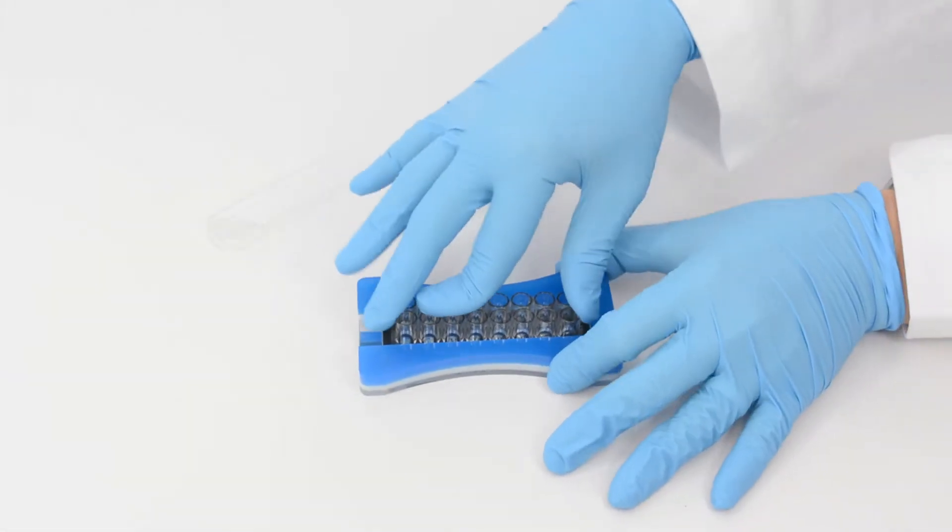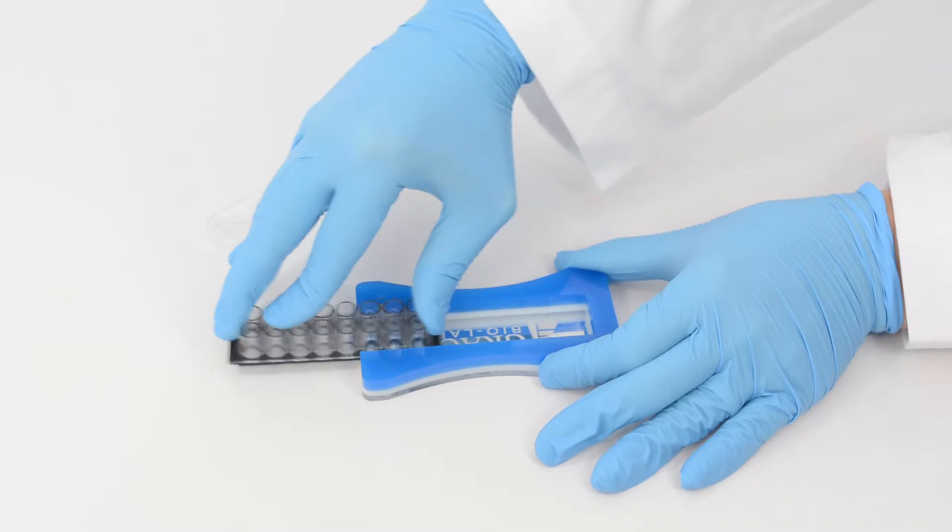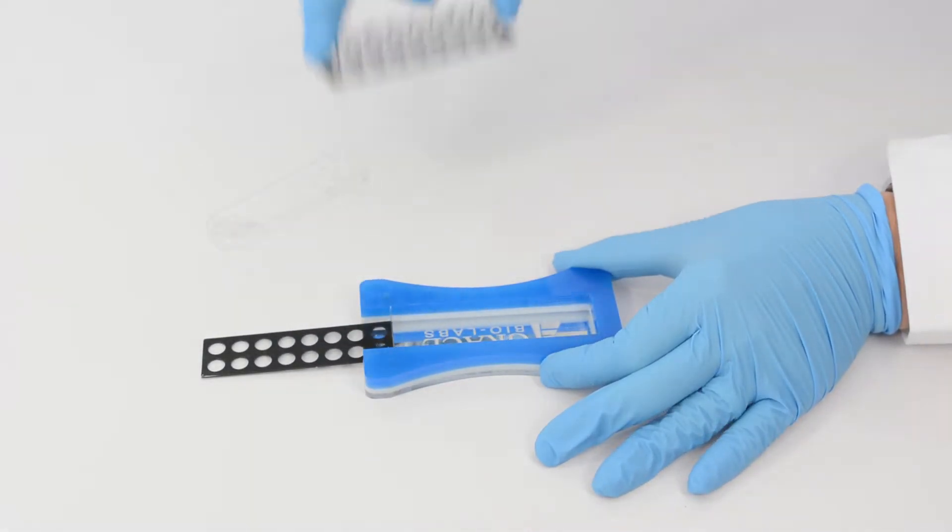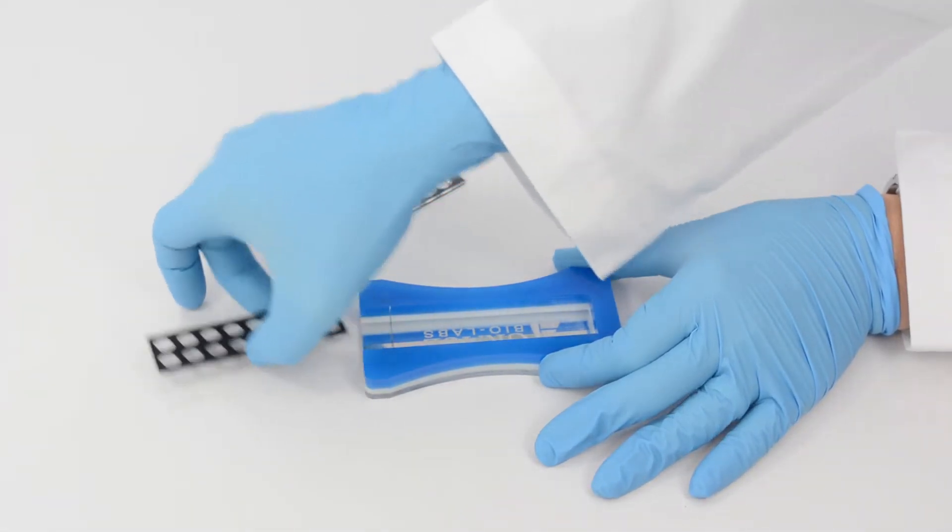Gently move the chambered coverglass through the removal tool. Multiple passes through the removal tool will separate the gaskets naturally.